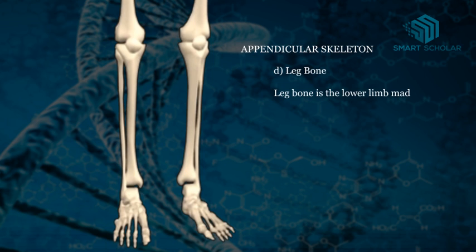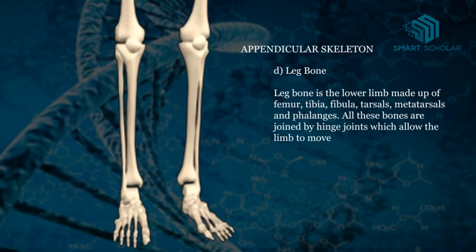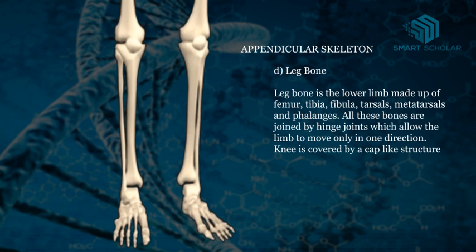Leg bone is the lower limb made up of femur, tibia, fibula, tarsals, metatarsals and phalanges. All these bones are joined by hinge joints which allow the limb to move only in one direction. The knee is covered by a cap-like structure called the patella, or kneecap.